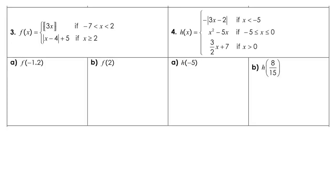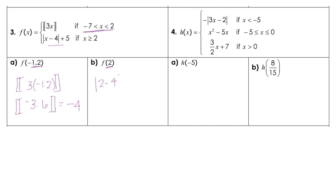For the next part, we're going to sub in negative 1.2, and negative 1.2 would fall into the top part. So we have the greatest integer of 3 times negative 1.2, which is the greatest integer of negative 3.6 — that's the integer closest without being larger, so that is negative 4. Subbing in 2 gives the absolute value of 2 minus 4 plus 5 — that's the absolute value of negative 2 plus 5 — which gives us 7.